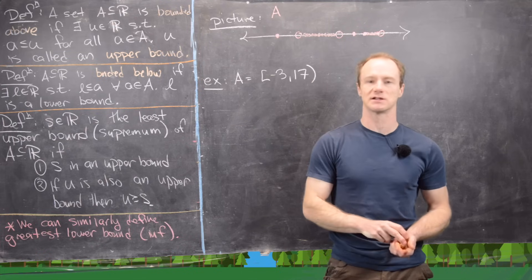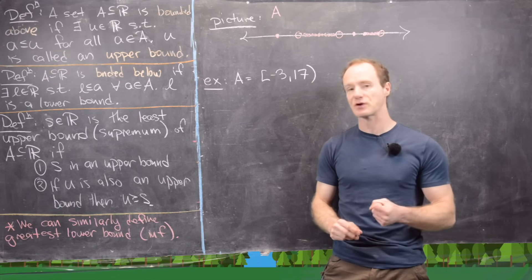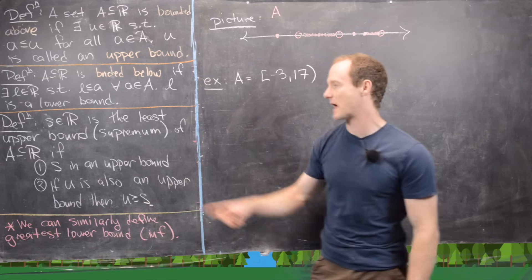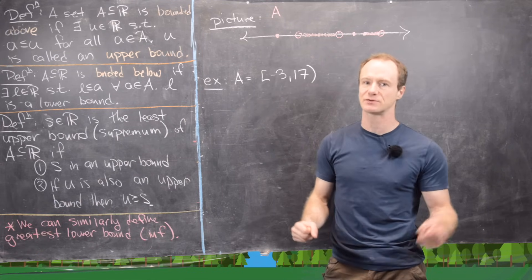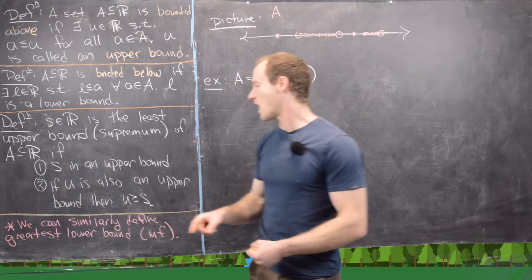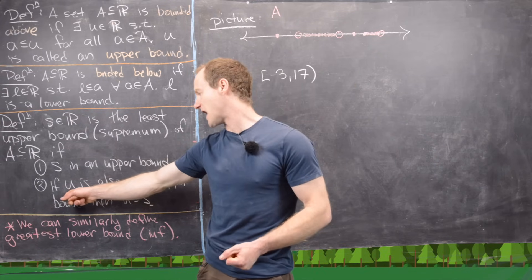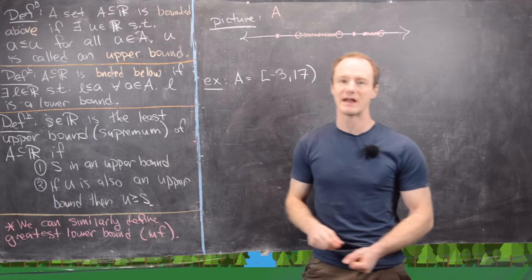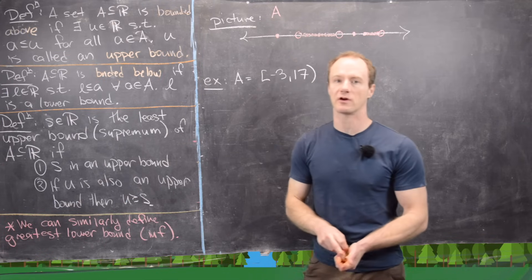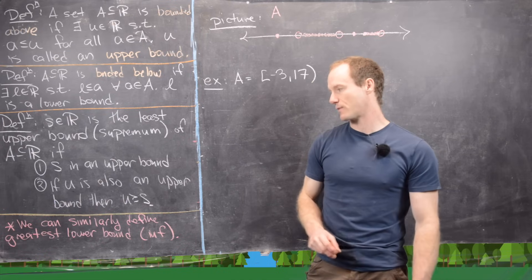We've also got special upper bounds and lower bounds called least upper bounds or greatest lower bounds, also known as supremum and infimum. S is said to be the least upper bound, or supremum, of A in R if S is an upper bound of A, and if we have any other upper bound U, then U has to be bigger than or equal to S. That makes S smaller than or equal to every upper bound — in other words, it's the least such upper bound.